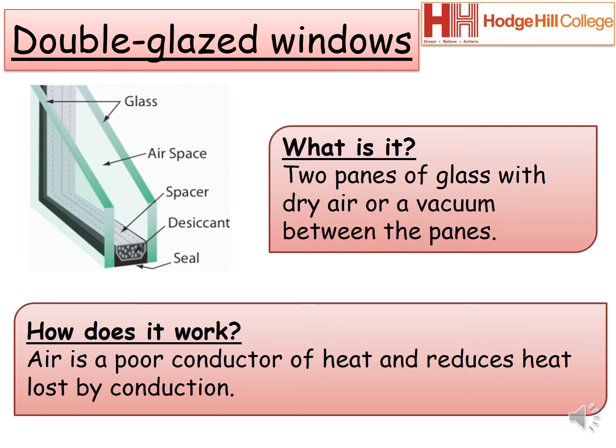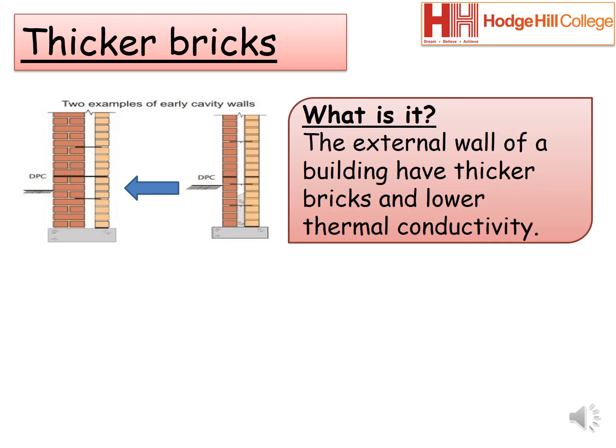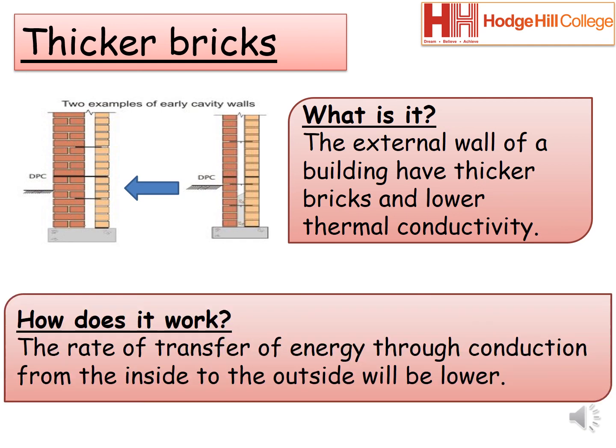This is triple glazing. Using thicker bricks — in the picture you can see two examples of walls. They are both cavity walls with an exterior and an interior wall. For the diagram on the left the wall is made thicker than the wall on the right. The external wall of the building having thicker bricks will mean it has a lower thermal conductivity, which is a measure of how much energy can be transferred through it through conduction. It works by decreasing the rate of transfer of energy from the inside of the building to the outside.